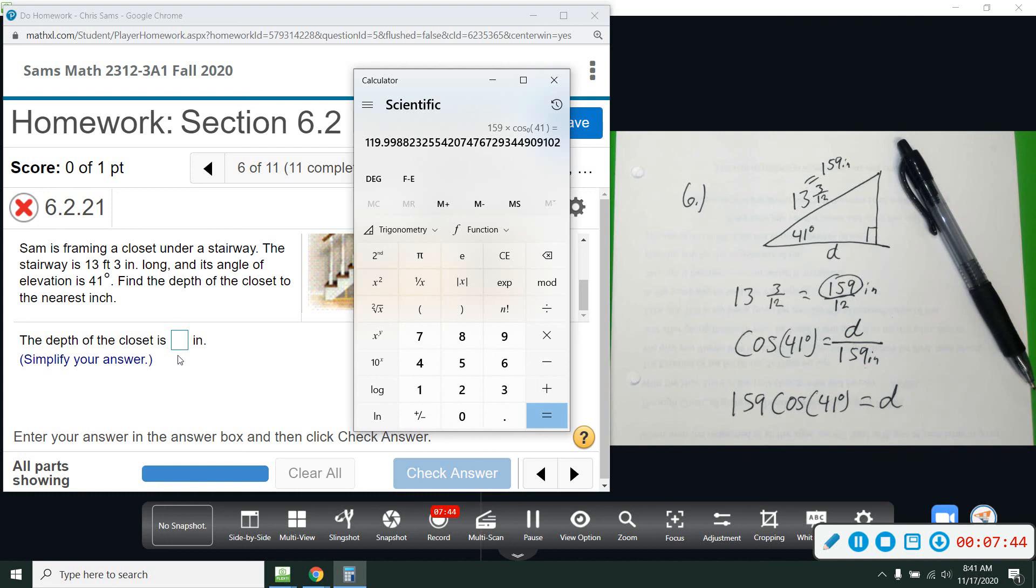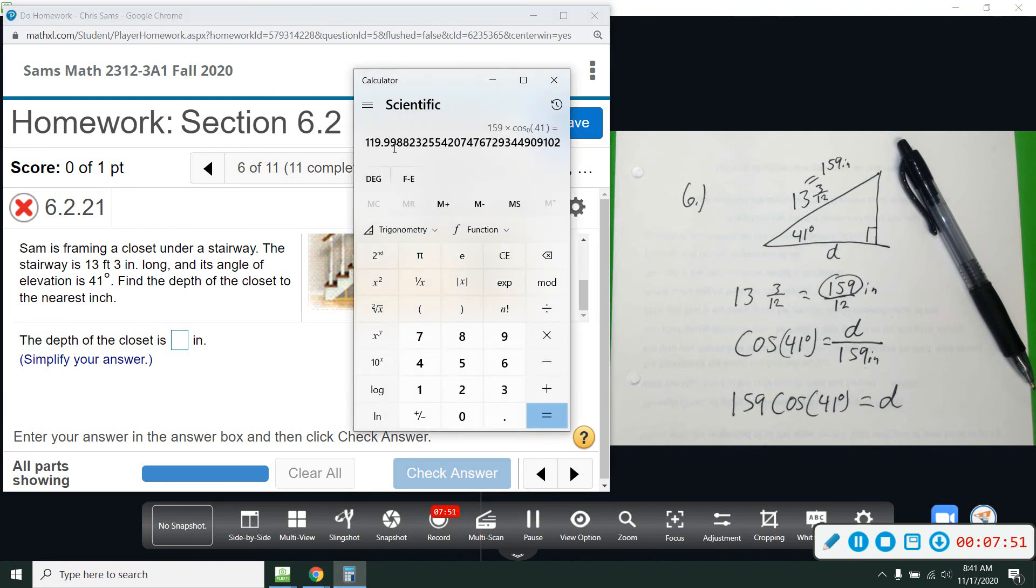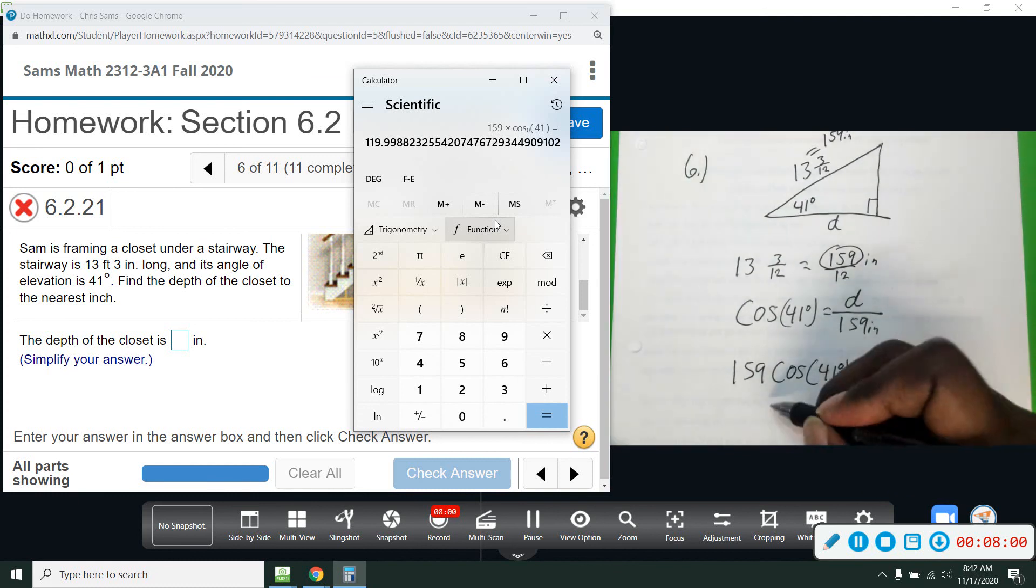And then we hit enter. We want to closest to the nearest inch, so we want a whole number. Alright. So we have 119.9. Now I'm going to round up. So we're going to say about 120 inches. Okay. So we get 120 is the approximate depth.